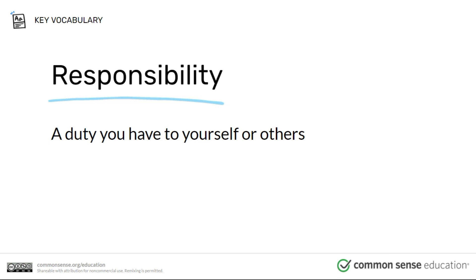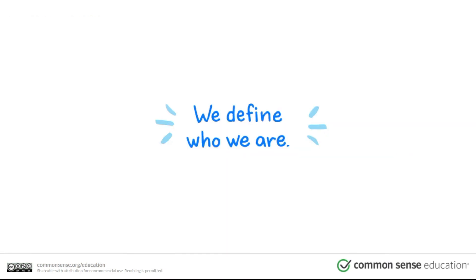Your assignment today, after watching this video, is to think about what some of our responsibilities are for being online — both to yourself and to others. In your assessment below, you'll have a sheet where you can type in some of your responsibilities to others and some responsibilities to yourself, followed by a quiz. Remember: you define who you are. What you do leaves a footprint, and people can infer information about you and others based on that footprint. So be careful — think twice before you post anything.